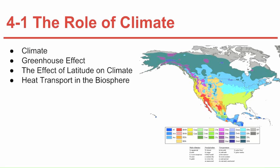Climate is different from weather. Weather is the day-to-day condition of Earth's atmosphere at a particular time and place, while climate refers to the average year-after-year conditions of temperature and precipitation in a particular region.